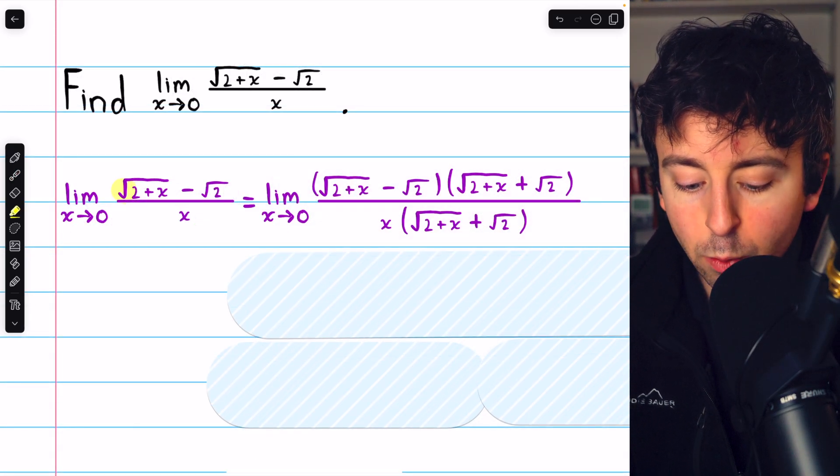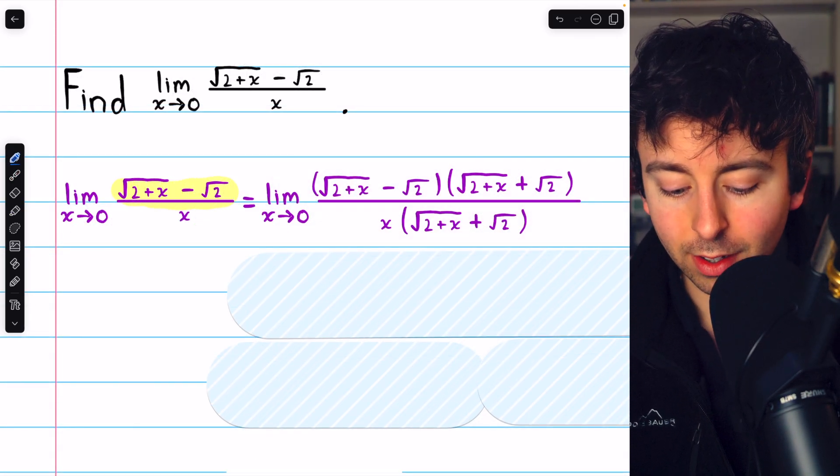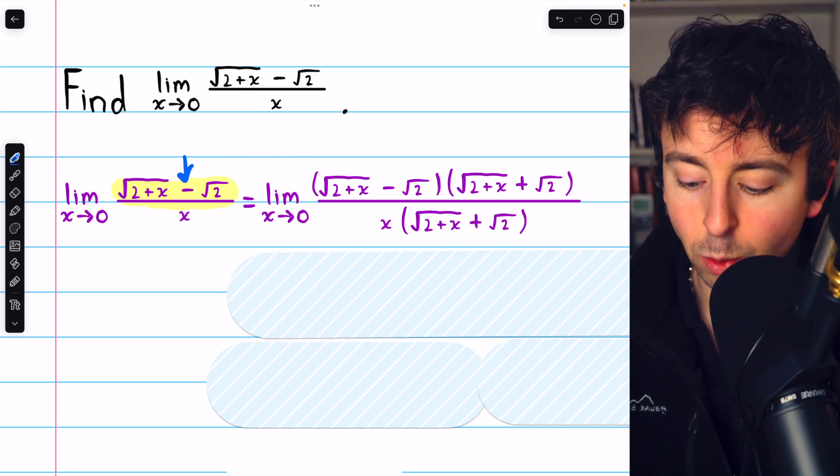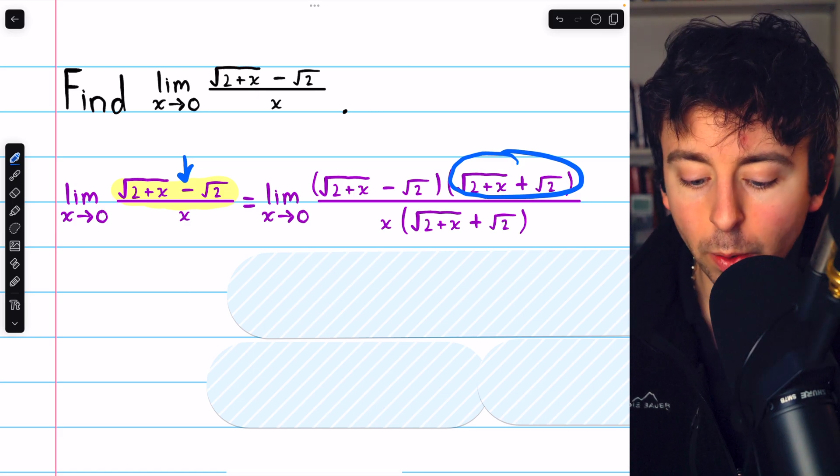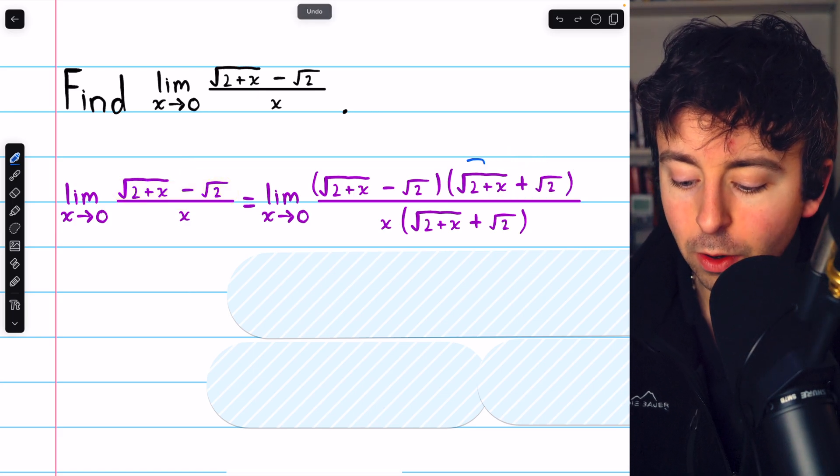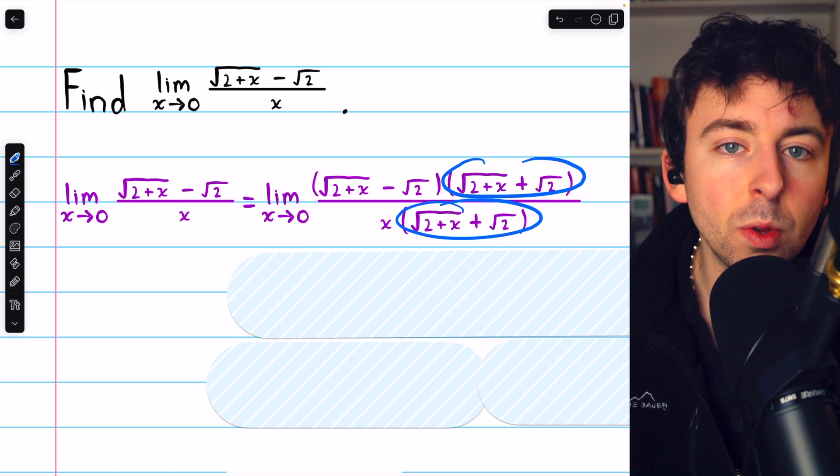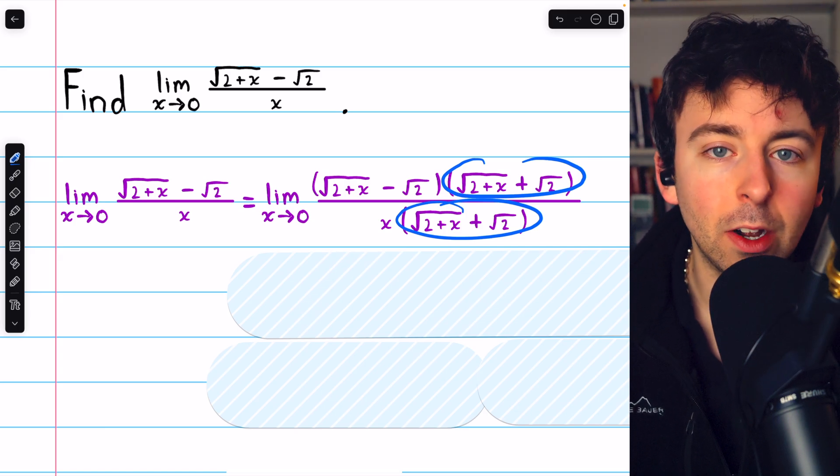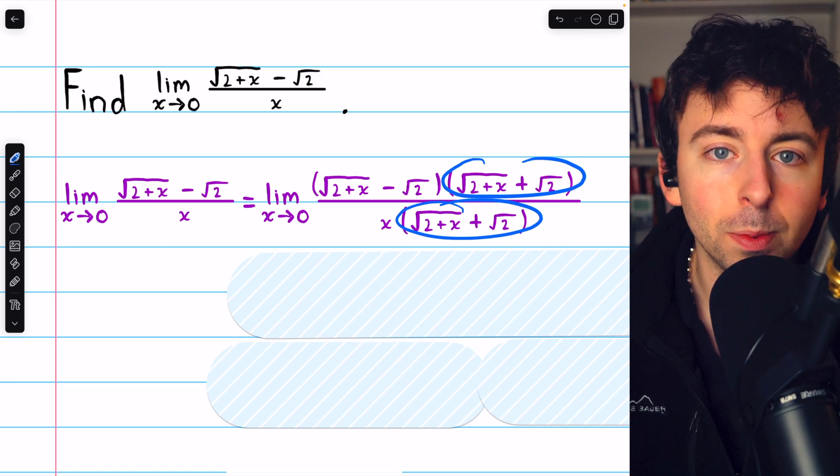The conjugate of √(2+x) - √2 is found by switching the sign in the middle, so √(2+x) + √2. What we're going to do is multiply the numerator and denominator by this conjugate. Since we multiply the numerator and denominator by the same thing, we're not changing the value of the expression. We're just multiplying by 1.